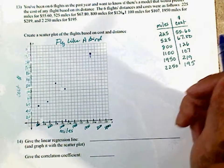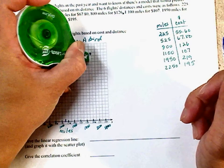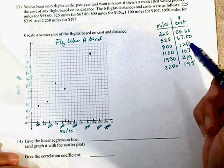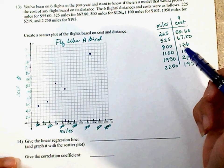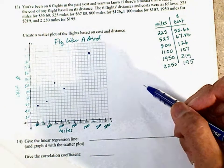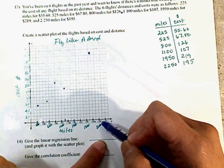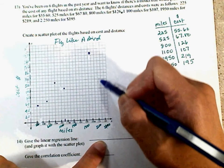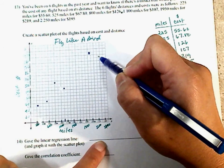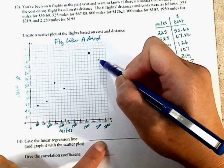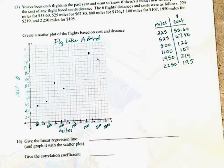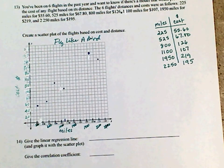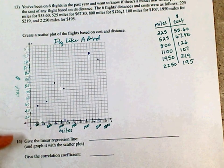At 1,950, which is almost 2,000, about right here. This is $219, so it'll be about right there. 2,250, about right here. And it'd be about 195, so about right here. So there is my scatter plot.